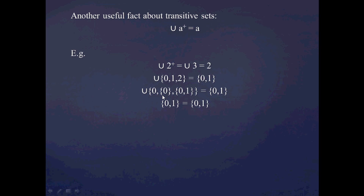So now I'm just going to take the union of this — looking at the members of the members, which is what union means. The empty set has no members, so I don't have to worry about that. The set {0} has one member: 0, so I write that down. And this next member has two members: 0 and 1. So I've already written down 0, and I have 1. Indeed, the set {0, 1} is equal to 2.